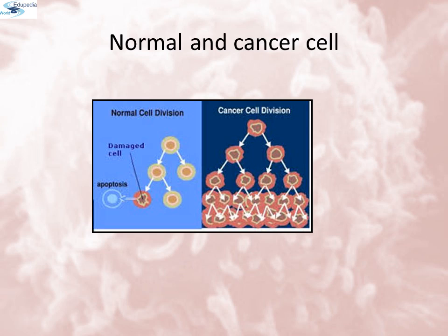This is a diagrammatic representation of the cell division of normal cells and the cancer cell. You can see that cancer cells multiply very rapidly and do not have any apoptosis, whereas normal cells, when damaged, will undergo apoptosis.